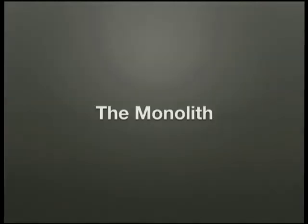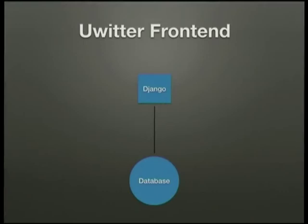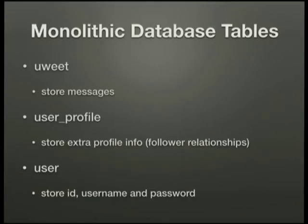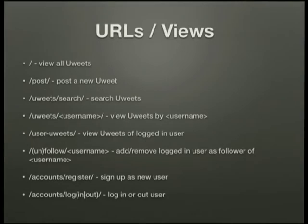We start off with a monolithic application which we'll then break down into microservices. Starting off it's really simple: we have a Django front end and a single database to store all the stuff. There are three main tables we're interested in: a ueet table which stores messages, a user profile table which stores extra information about a user — in this case just the follower relationships — and a user table which stores user ID, username, and a hash of the password.